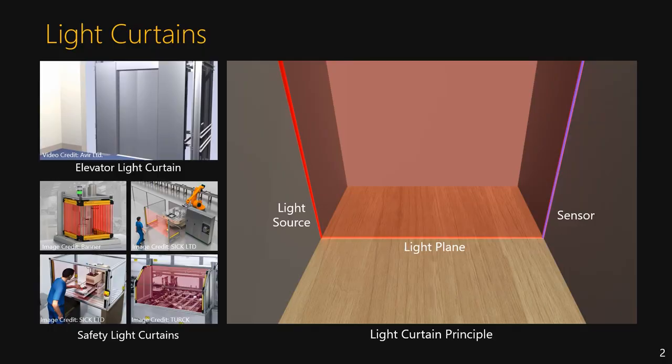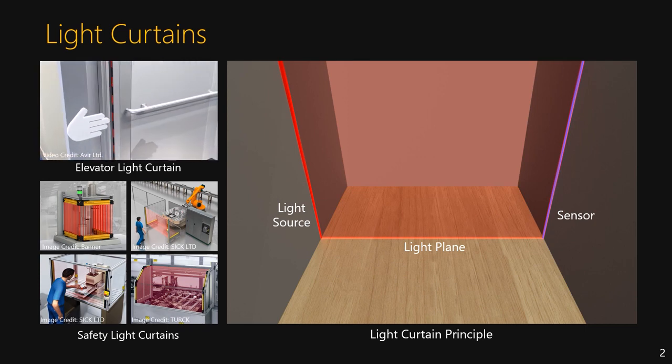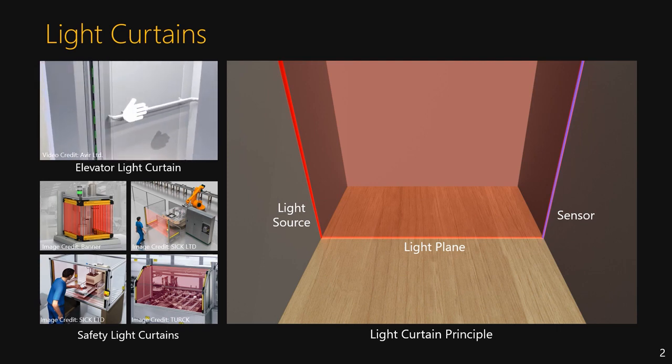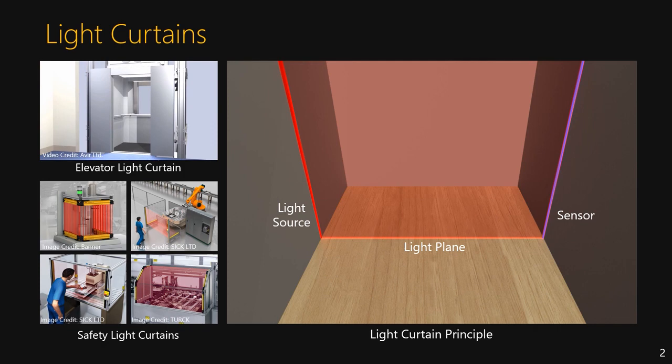Some of you may have never heard of light curtains before, but I am sure that you have all experienced them. Light curtains are the devices in elevator doors that keep the door from closing when objects are in the way. If light emitted from one side of the door is not received by the other side, then it knows that something is in the way and stays open. Besides elevators, light curtains are often required in factories to keep people safe from heavy machinery. Light curtains are very simple and very reliable, but they are also very inflexible, as they can only image a single predefined plane.